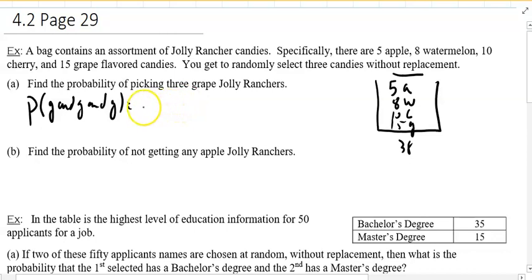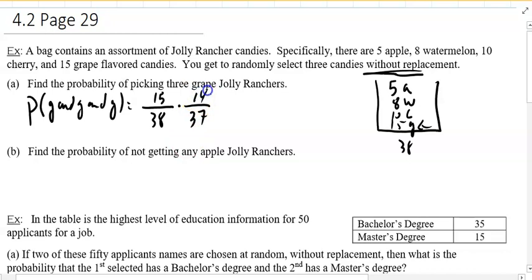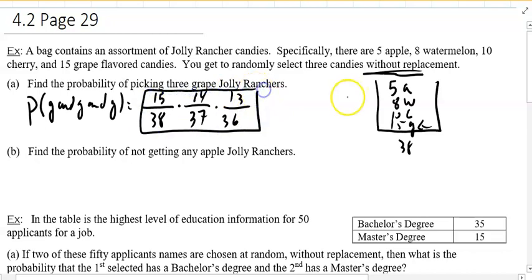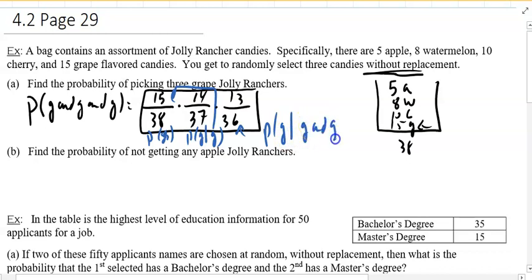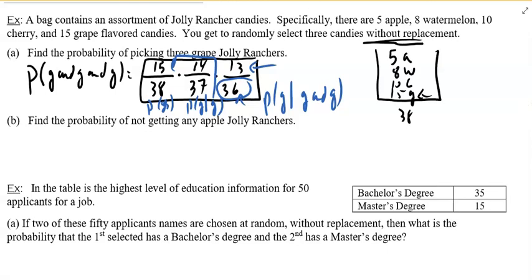On the first pick, out of 38, how many are grapes? There are 15. Now that I held one in my hand without replacement, there are 37 to choose from and only 14 of them are grapes. And for the third, that's 36 choices and 13 grapes. This is the probability of a grape, then the probability of a grape given you already have one in your hand, then the probability of a grape given you already have two. That's why the denominator changed — that's what it means to be dependent.